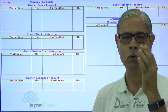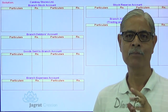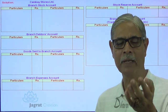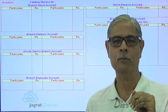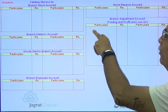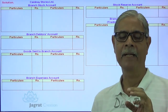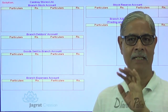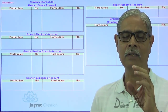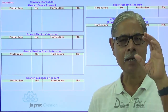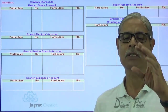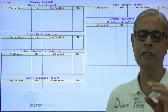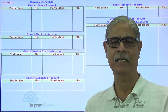In a trading account, we write opening stock, closing stock, purchases, and sales. In the branch adjustment account, we do not record those items directly, but we still find out the gross profit using a different analogy and understanding. The upper part of the branch adjustment account finds out the gross profit, and the lower part finds out the net profit. That is the first thing to understand about this account.